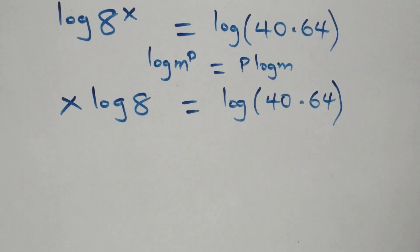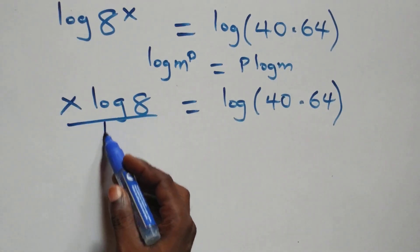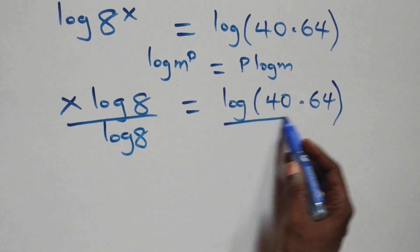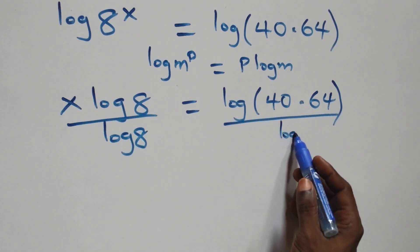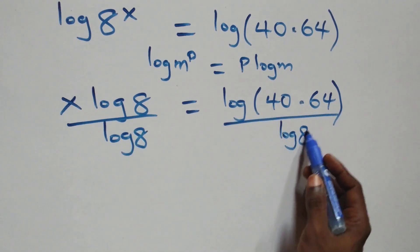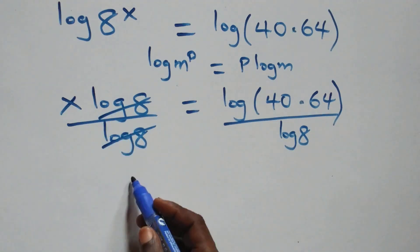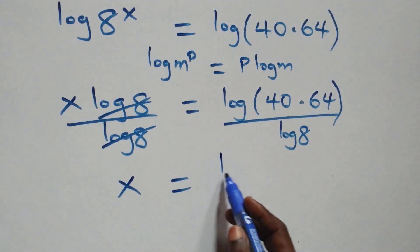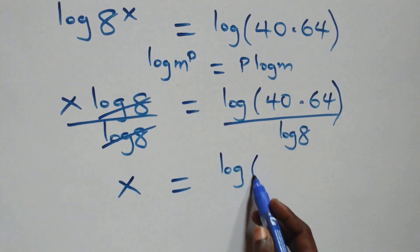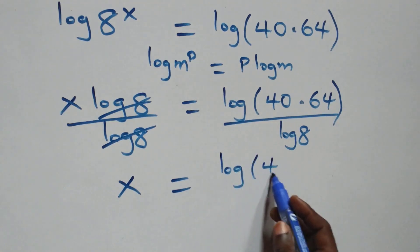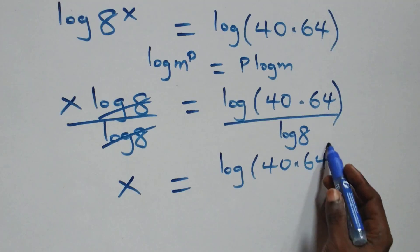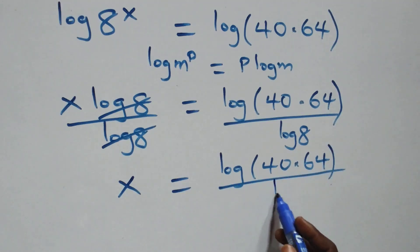Next step, we divide both sides by log 8. We divide this side by log 8 and also divide this side by log 8. The log 8 terms cancel each other, and we are left with x equals log of 40 times 64 over log 8.